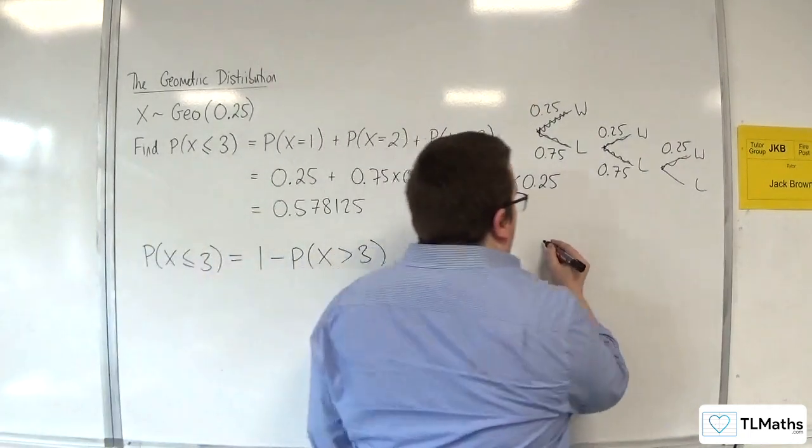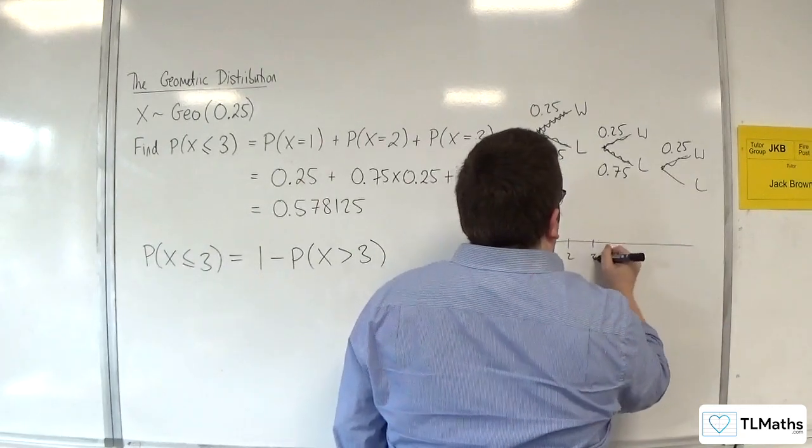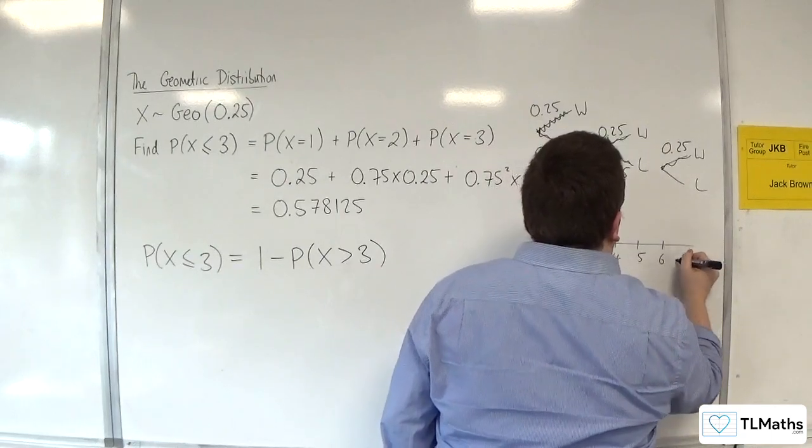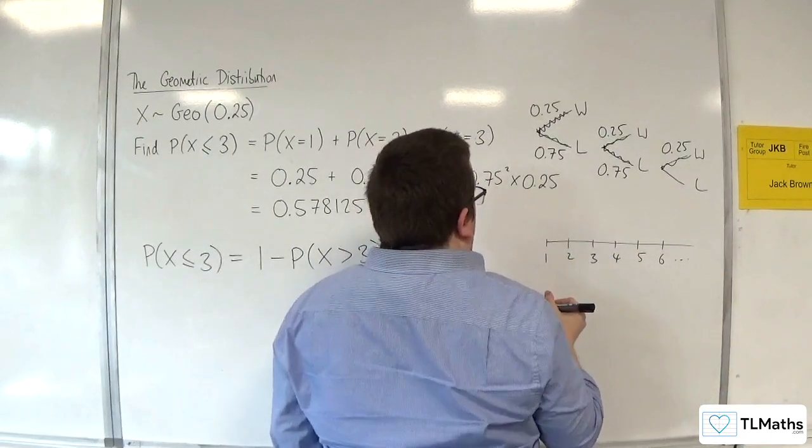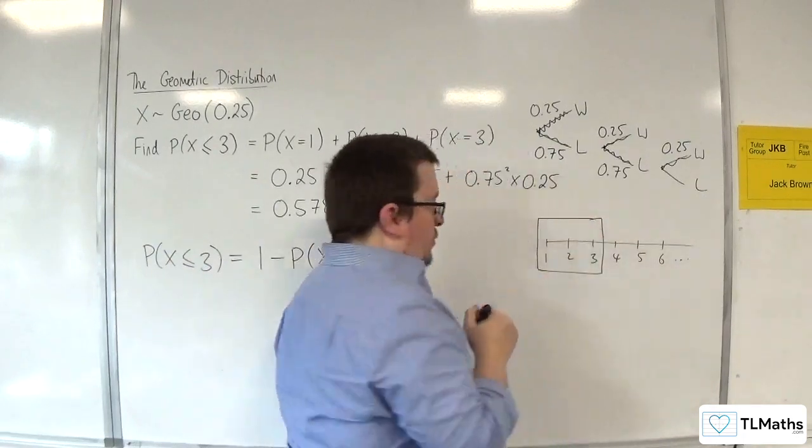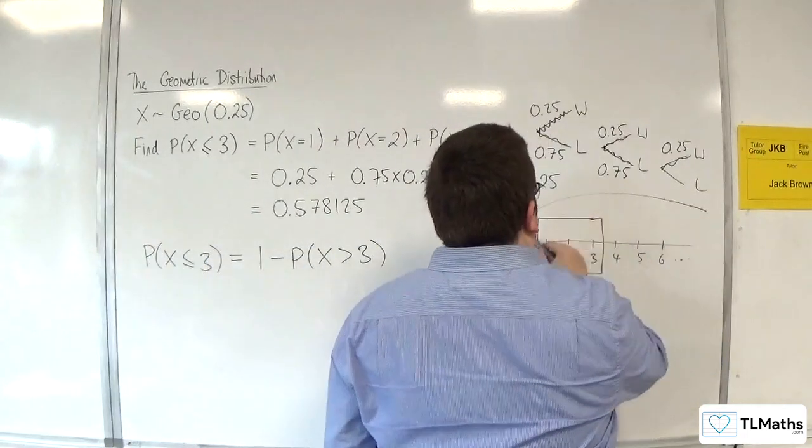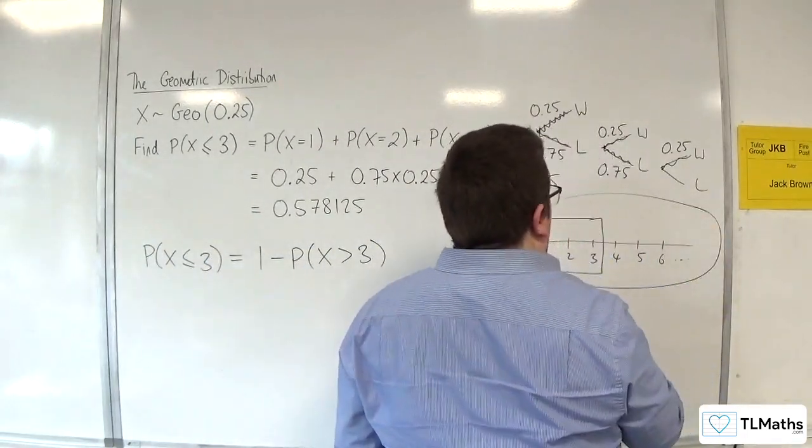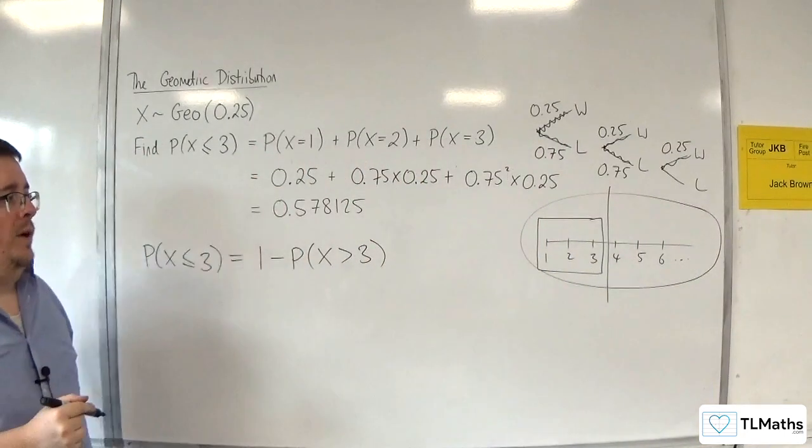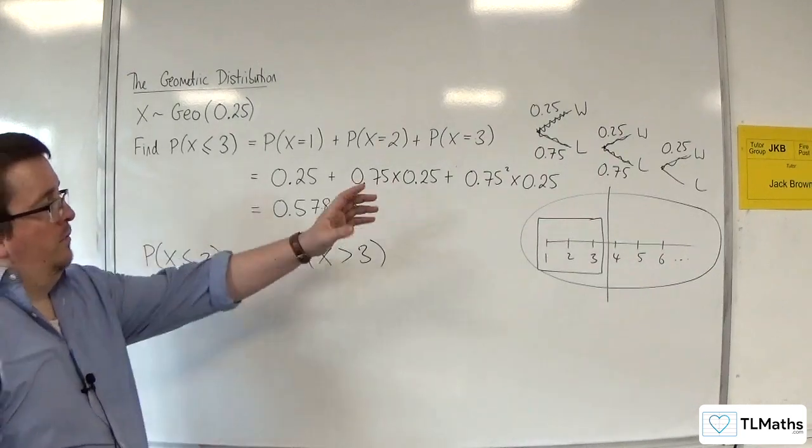Essentially, if you've got your number line, and you're starting at 1, 2, 3, 4, 5, 6, etc. If you want less than or equal to 3, which is those 3, then it's the same as doing 1, which is all of them, take away the bit you don't want, which is greater than 3. So, all of those.